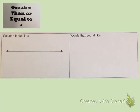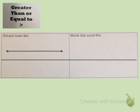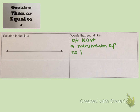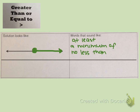Now on to greater than or equal to. Draw that line for our example space at the bottom. Words that indicate greater than or equal to include 'at least,' 'a minimum of,' and 'no less than.' On a number line, we're going to draw a closed dot and then draw an arrow to the right of the closed dot.